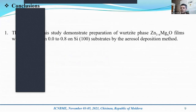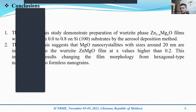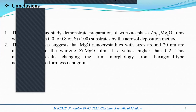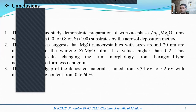The results of this study demonstrate preparation of wurtzite phase zinc-magnesium oxide films with x-values from 0 to 0.8 on silicon substrate by the aerosol deposition method. XRD analysis suggests that magnesium oxide nanocrystals with sizes around 20 nanometers are incorporated into the wurtzite zinc-magnesium oxide films at x-values higher than 0.2, resulting in a change of film morphology from hexagonal-type nanoneedles to formless nanograins. The optical band gap of the deposited materials is tuned from 3.34 eV to 5.2 eV with increasing the magnesium content from 0 to 60%.